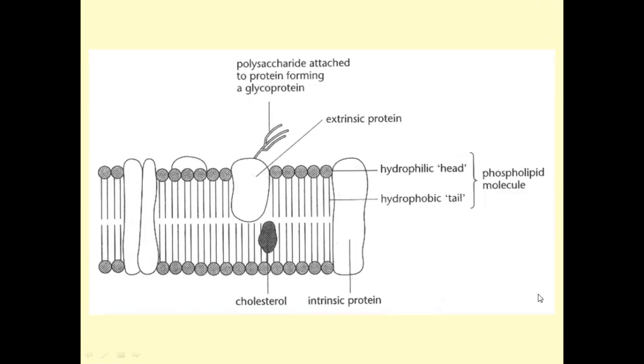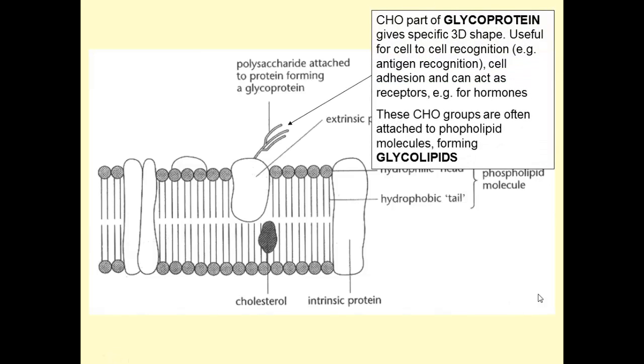That leads us to the fluid mosaic model. And the fluid mosaic model includes in it a number of different molecules. It gives, of course, our phospholipid bilayer. But there are things nestled in that phospholipid bilayer. Let's start off with this one here. This is an extrinsic protein. And attached to that extrinsic protein is this bit here. A polysaccharide. Now, that polysaccharide I've abbreviated here as CHO. That's my abbreviation for carbohydrate, quite a common one. And it gives this glycoprotein.